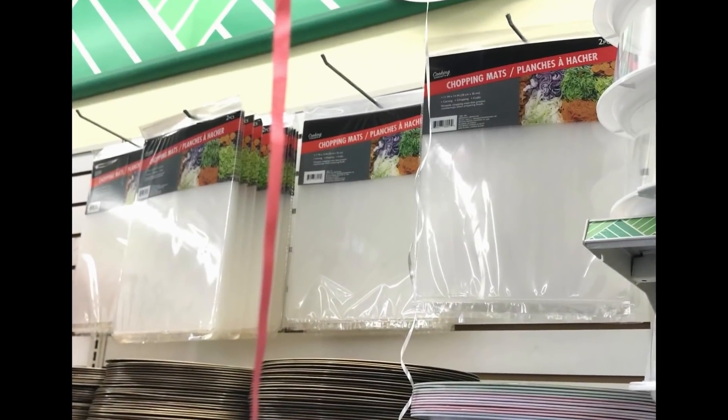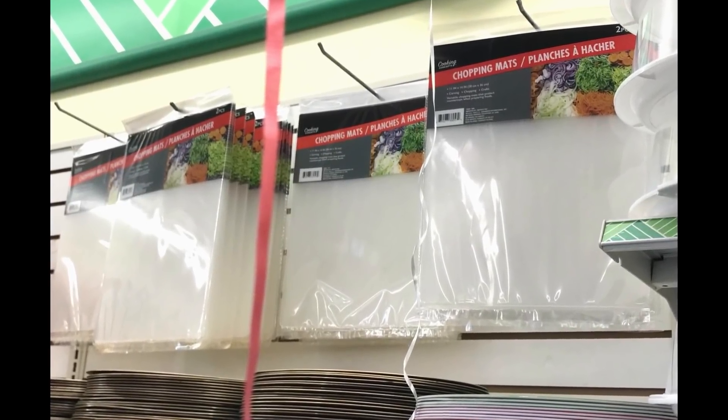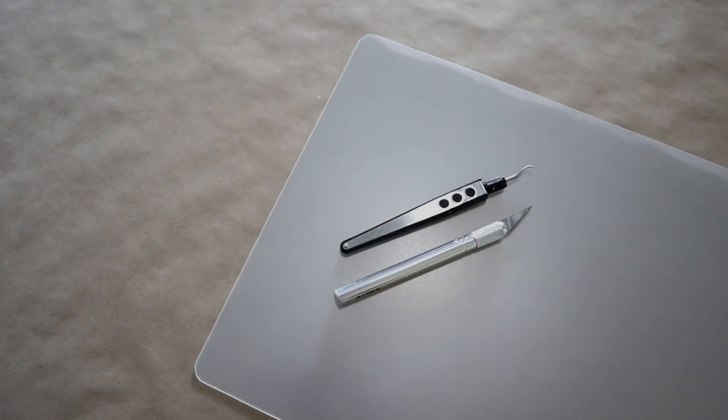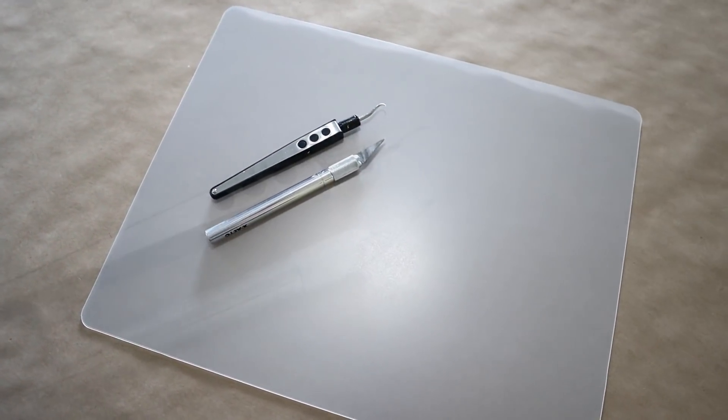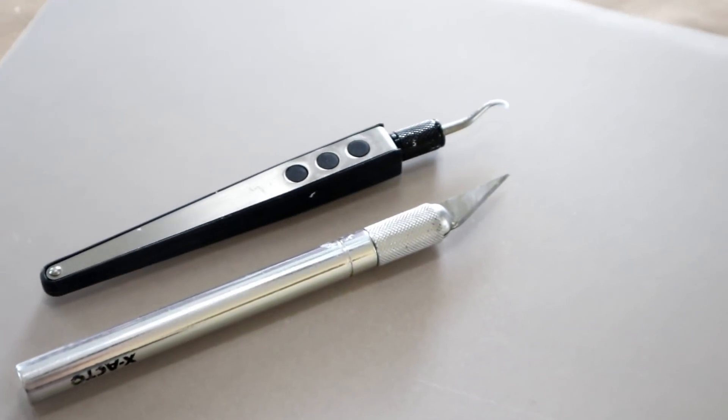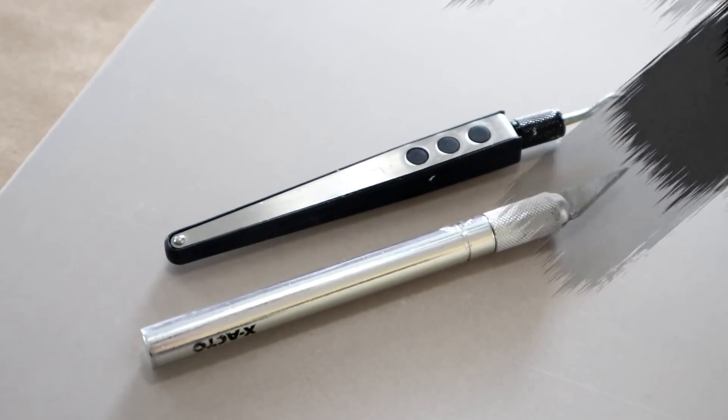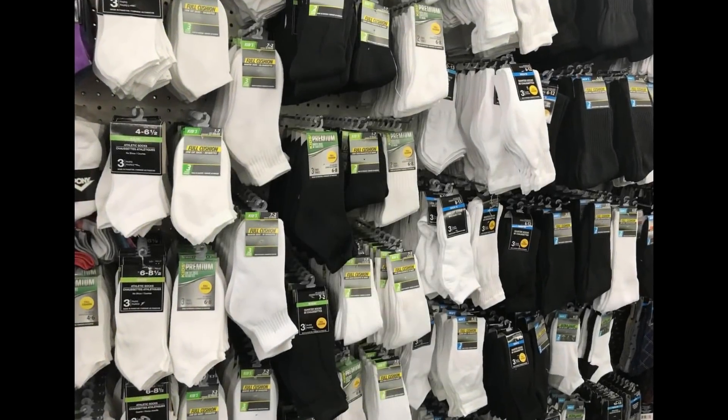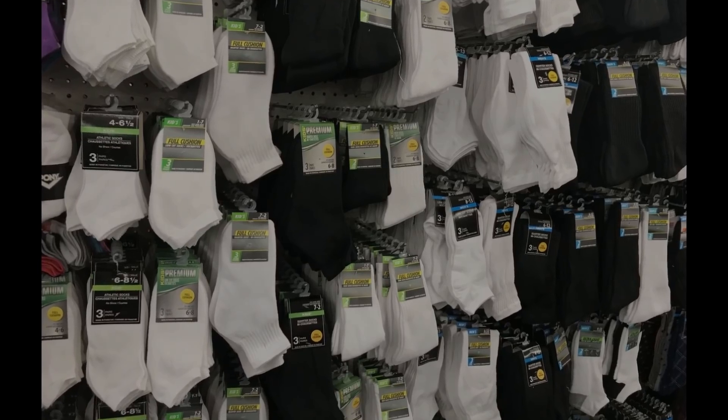The first one is using these chopping mats, as Dollar Tree calls them. I use them to protect my surfaces whether I'm using an exacto knife or weeding vinyl.